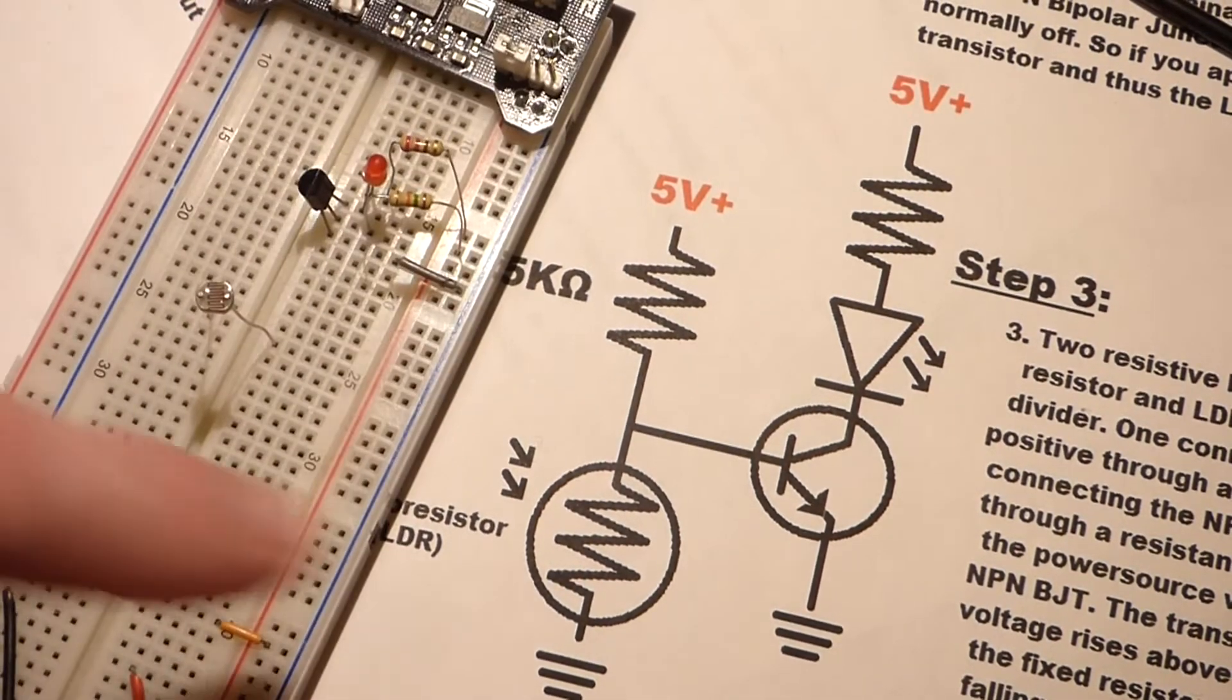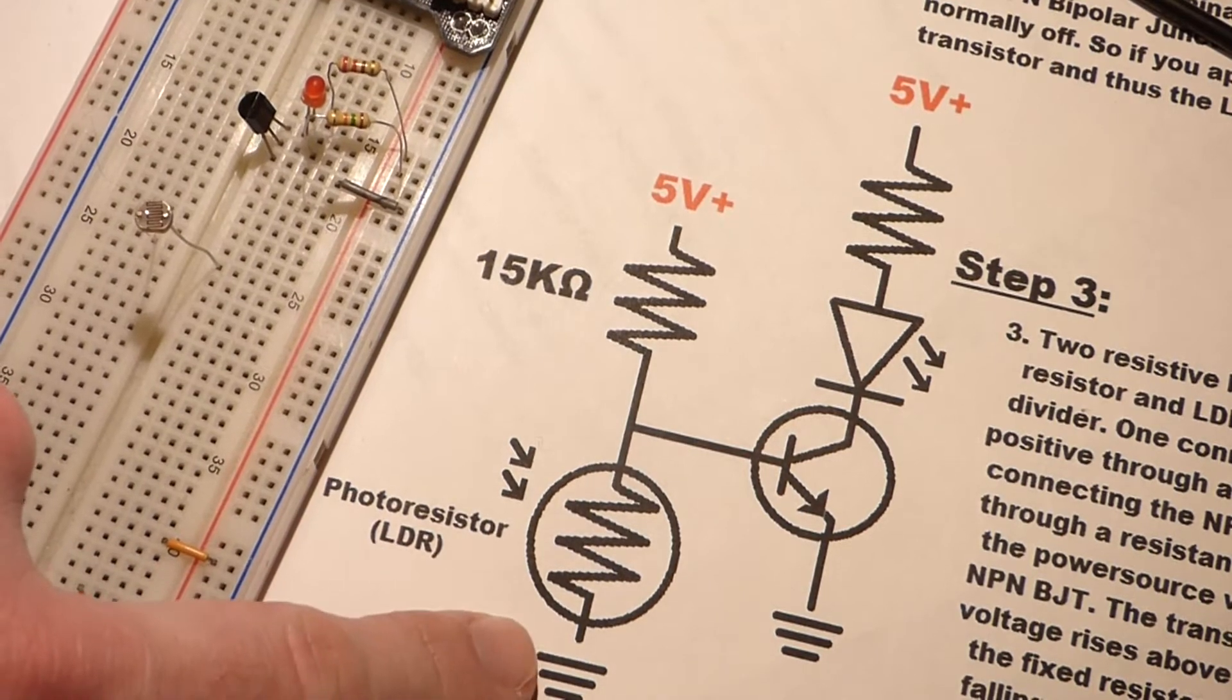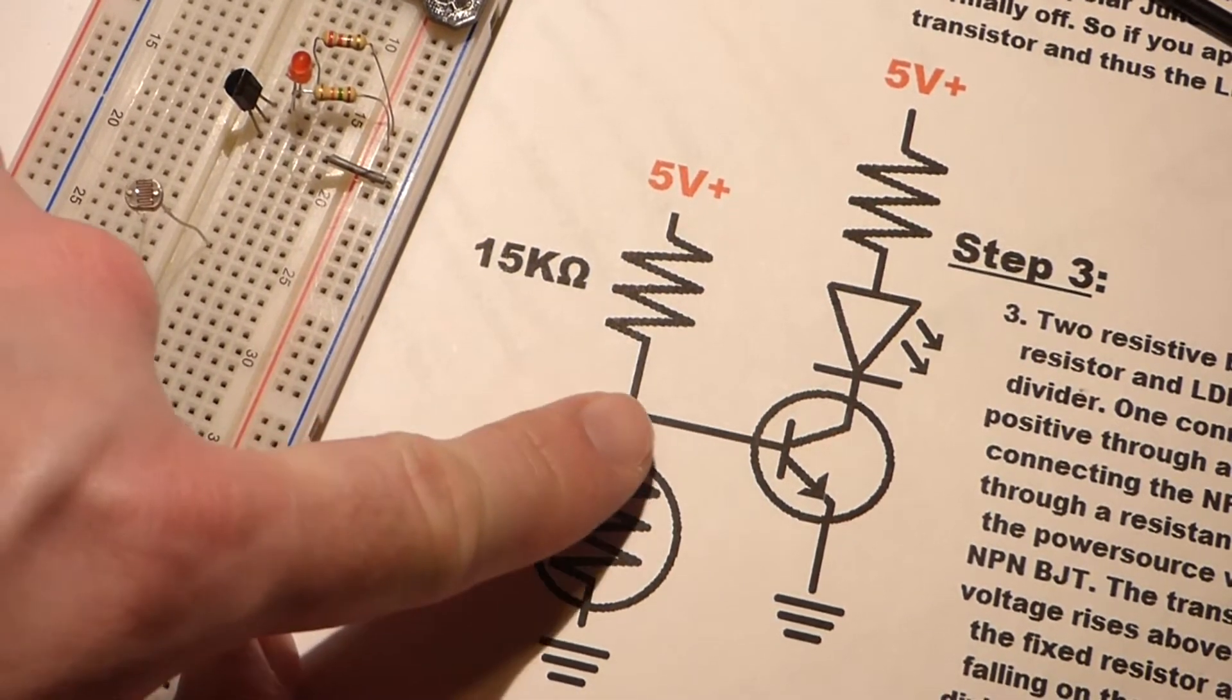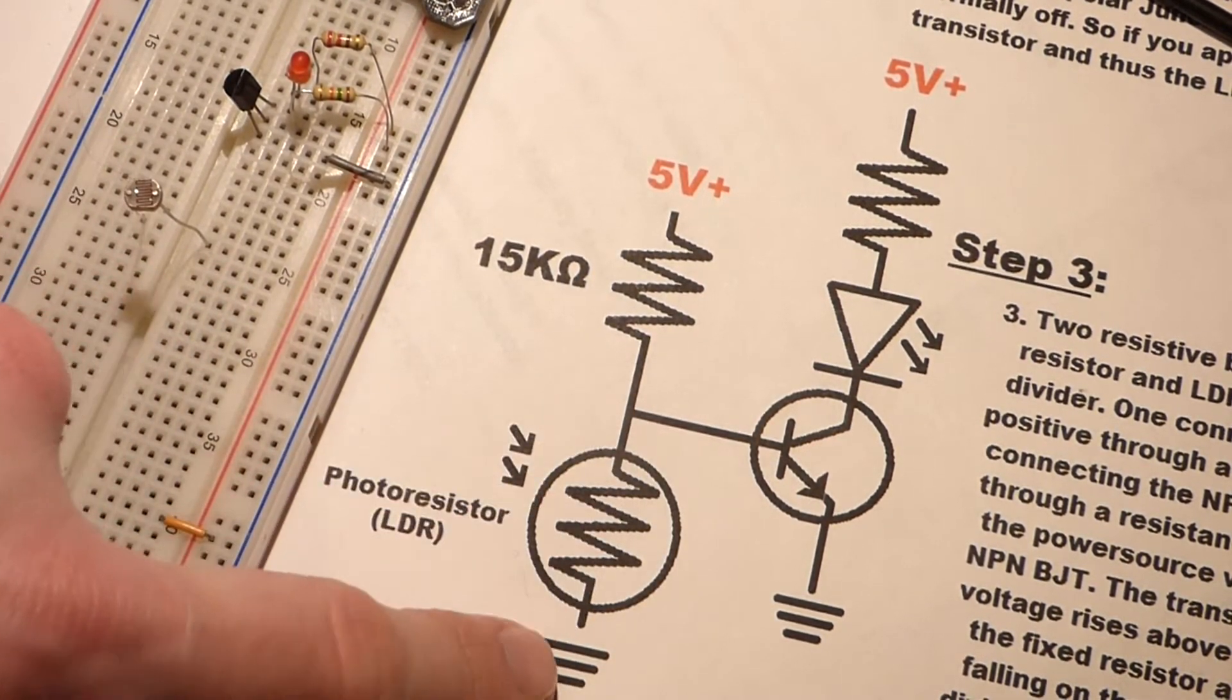The resistor is just limiting the current, but there's plenty of voltage to get the transistor to turn on and conduct freely. So we're going to turn the power off now, and we're going to add the light-dependent resistor, which also connects to the base, but then it connects to ground.